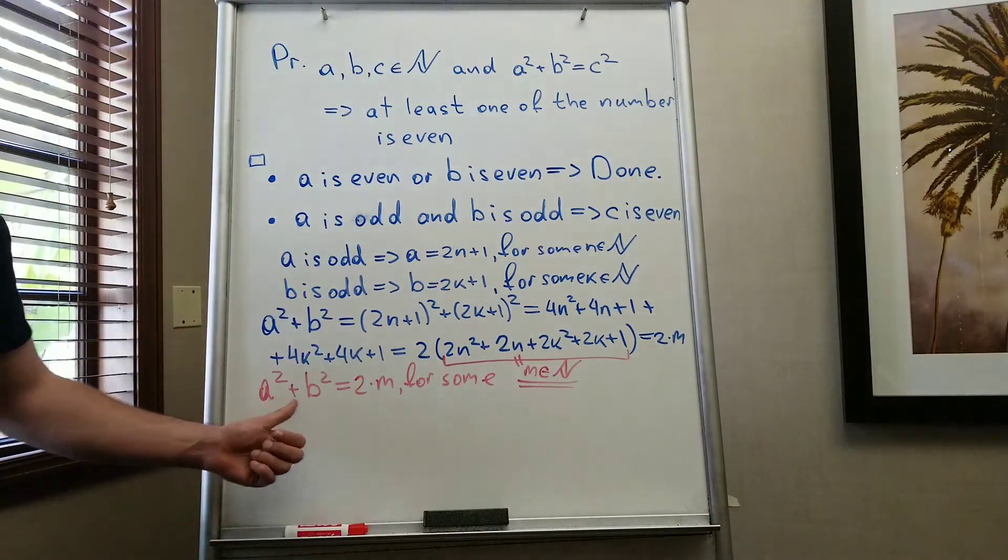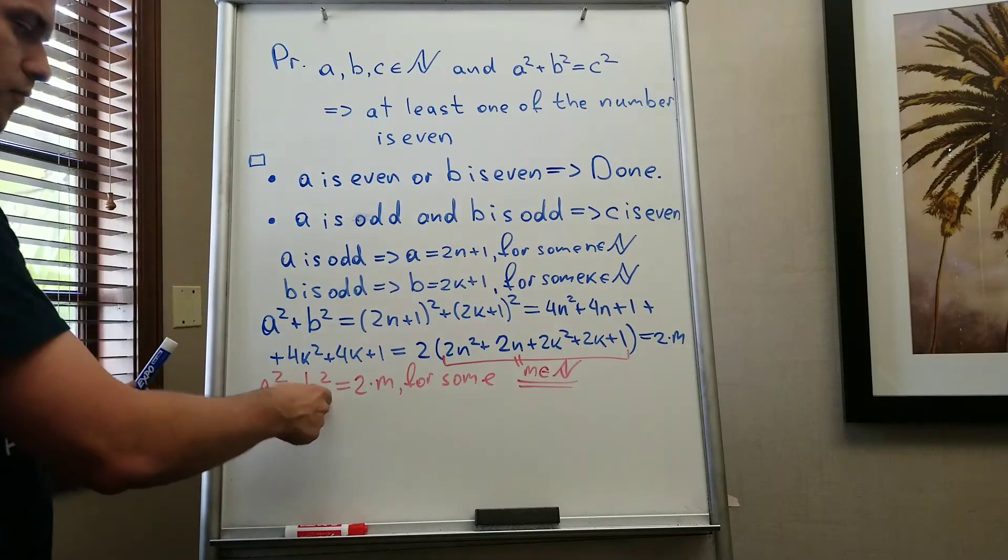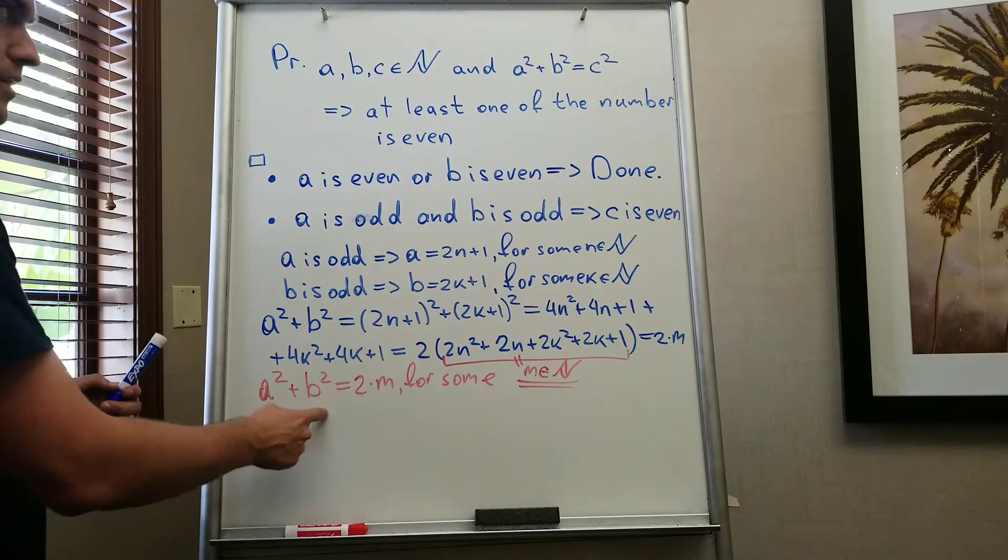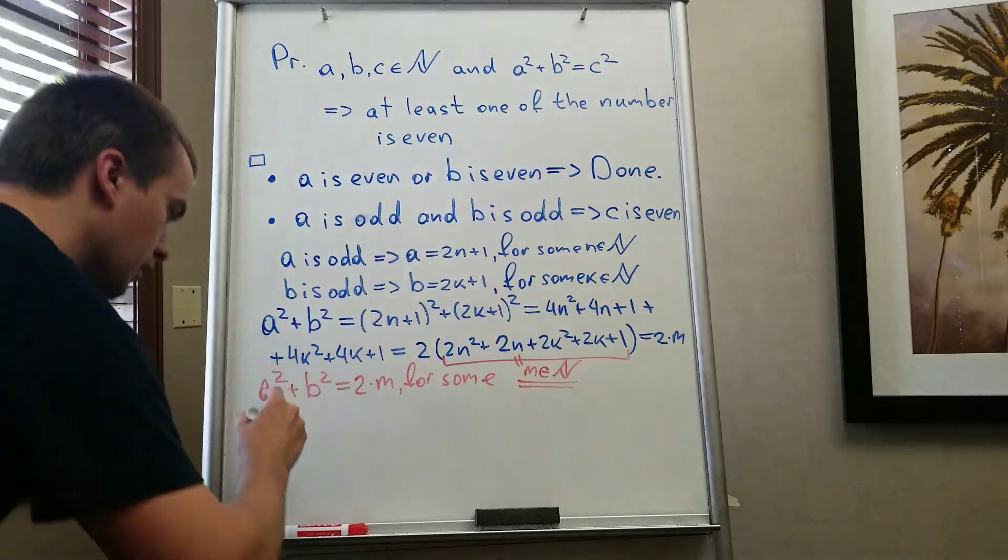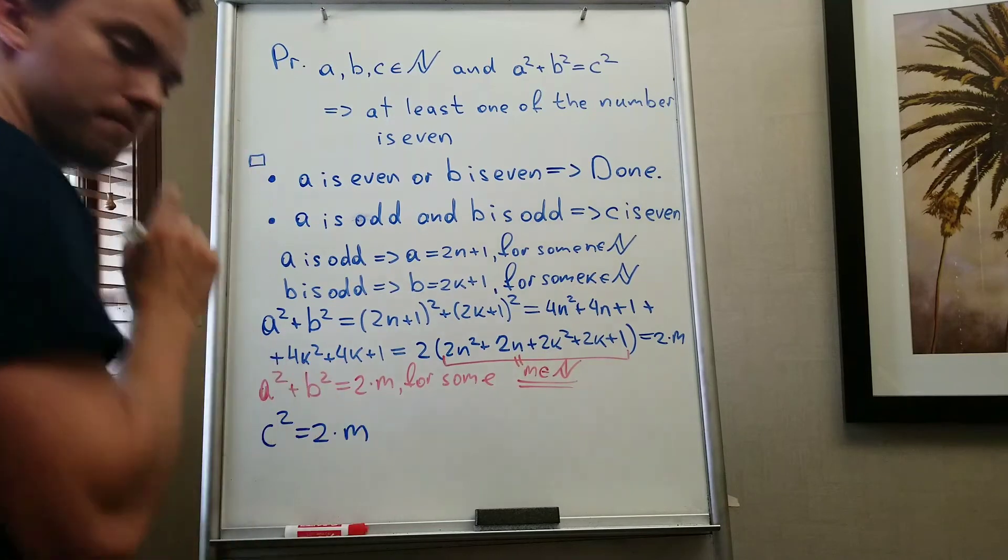Okay, so I got that a squared plus b squared is even. But from one side, but from another side, a squared plus b squared equals c squared. So I have that c squared equals 2 times m.